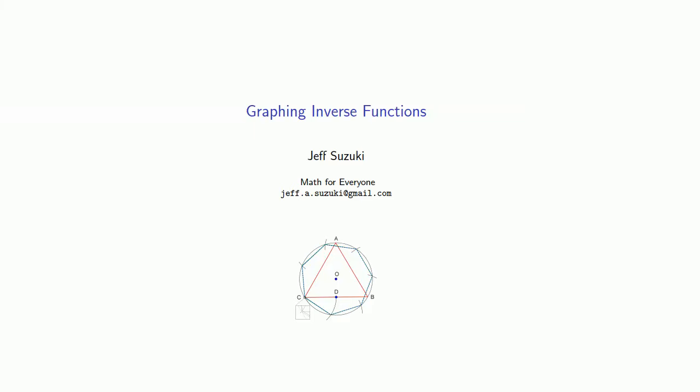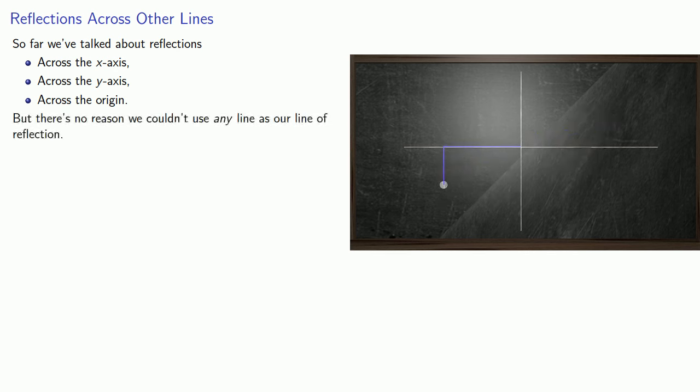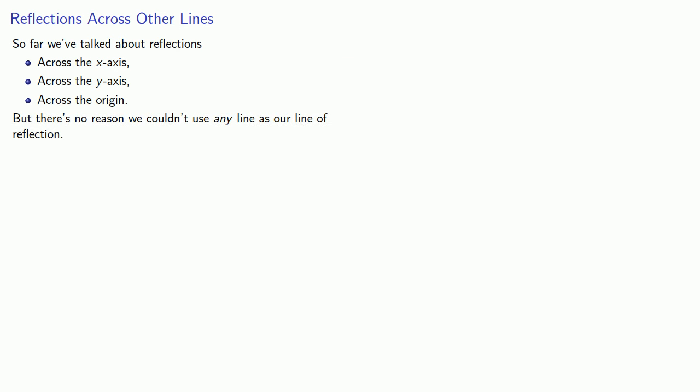One specialized type of transformation comes when we try to graph an inverse function. So far, we've talked about reflections across the x-axis, across the y-axis, and across the origin. But there's no reason we couldn't use any line as our line of reflection.